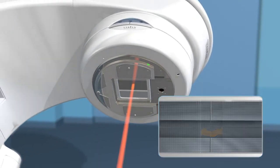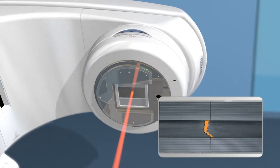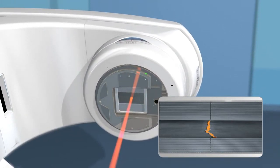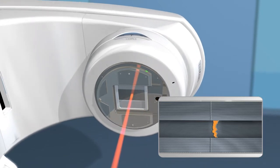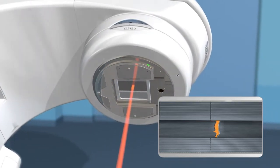IMRT is a method of external beam radiation therapy that modulates the dose to conform to the size, shape, and location of the tumor by varying its intensity across different parts of the target area.